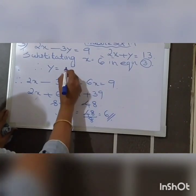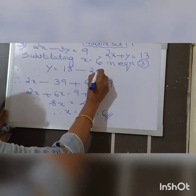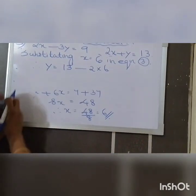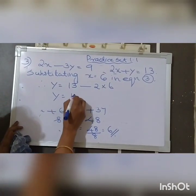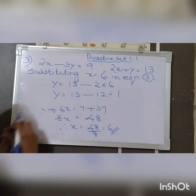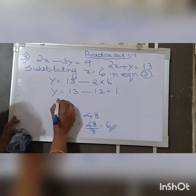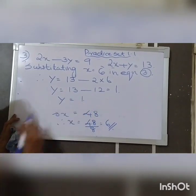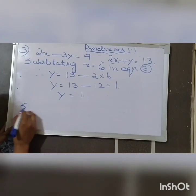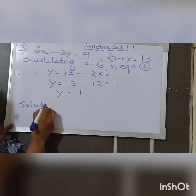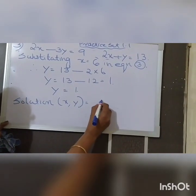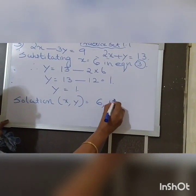Substituting X equals 6 in equation 3: Y equals 13 minus 2 times 6 equals 13 minus 12 equals 1. Therefore Y equals 1, and the solution is X equals 6 and Y equals 1.